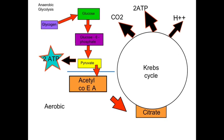The Krebs cycle consists of a series of eight enzyme-driven reactions that oxidize acetyl coenzyme A to carbon dioxide. There is also enough energy produced to resynthesize two molecules of ATP, and hydrogen ions are released.